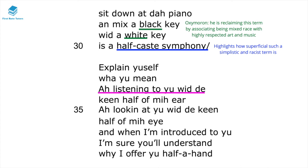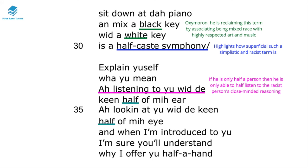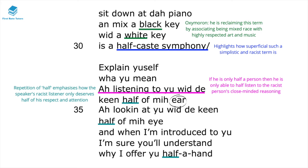He states 'listening to you with a keen half of my ear' — here he's saying that if he's only half a person, then he's only able to half-listen to the racist person's close-minded reasoning. The repetition of the term 'half' emphasises how the speaker's racist listener only deserves half of respect and attention. Furthermore, the semantic field of body parts — ear, eye, and hand — emphasises the speaker's humanity. Racist terms tend to rob people of their humanity, reducing them to the colour of their skin, but this reinforces that being mixed race doesn't make him any less human.